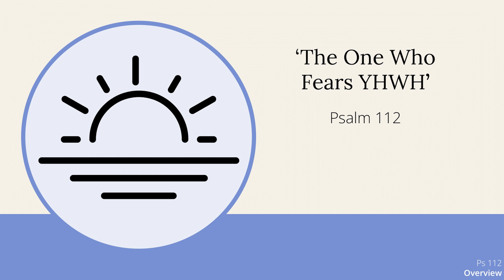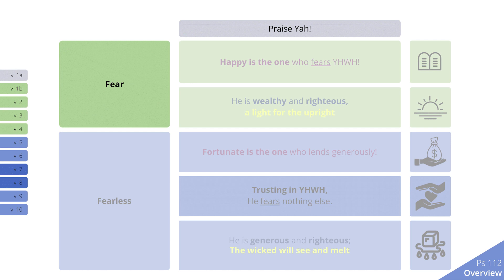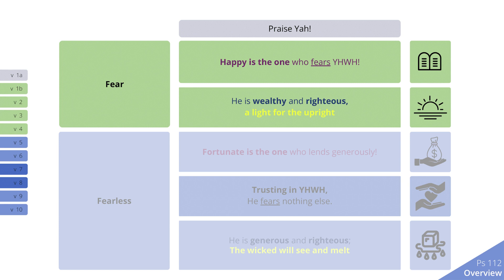First, we'll look at the structure. The psalm has two main sections. First is a section introducing the person who fears the Lord — the key word is fear, shown here underlined. This person receives abundantly from the Lord. The second section describes how this person is fearless.